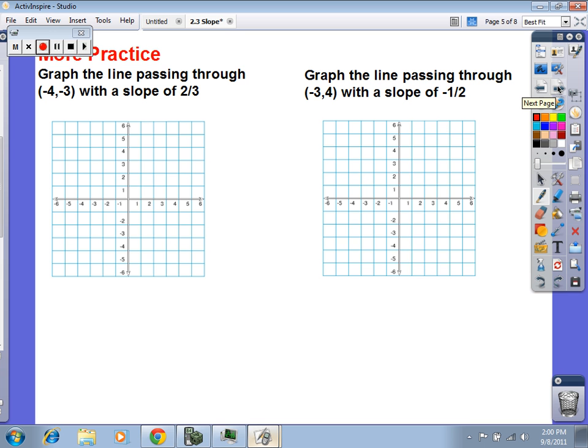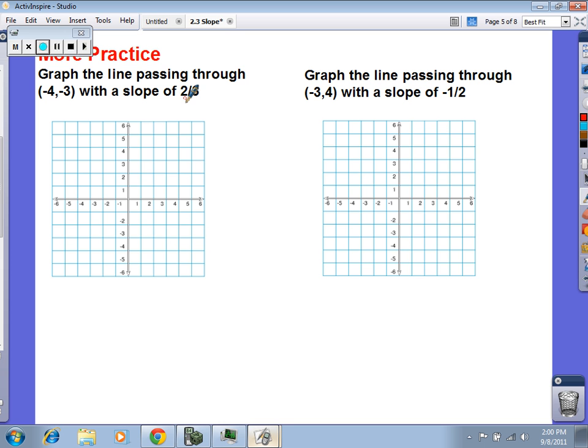Here we go. Your homework's going to be this. I'm going to give you a graph paper. I'm going to say I want you to graph the line that passes through the point negative four, negative three, and it's got a slope of two thirds. Kendra, what's our first step? Put a dot right here. Yeah. Put a dot right there. Negative four. Go left four, down three. Everybody got a dot.